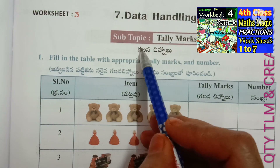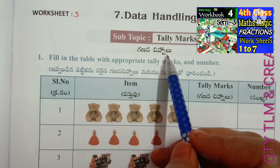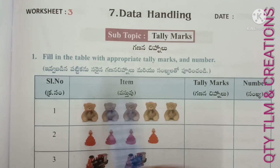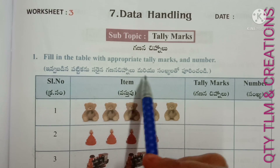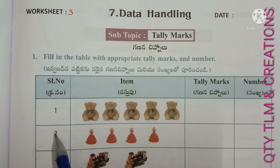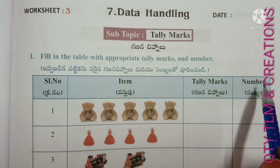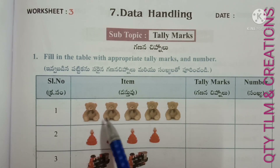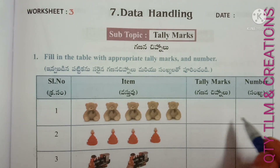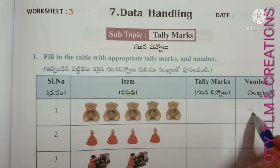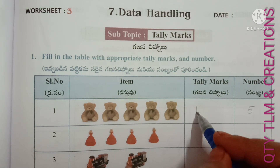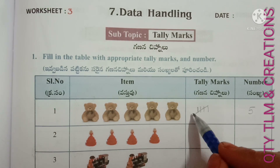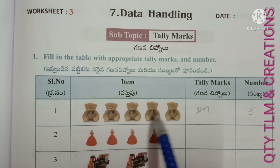Next, Worksheet Number 3. Subtopic: Tally Marks. First question — fill in the table with appropriate tally marks and number. Serial number, item, tally marks, and number. Serial number 1 — how many teddy bears are there? 1, 2, 3, 4, 5. So we have to write the number 5 here, and the tally marks 1, 2, 3, 4, 5. There are 5 teddy bears.